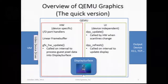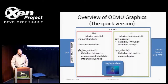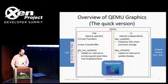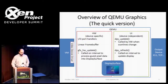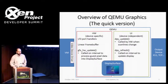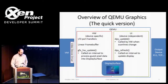This is a quick version of how graphics works in QEMU. There are two sides to the graphics stack: the hardware and the UI. The hardware is device-specific emulation — your Cirrus VGA or what have you. The UI is device-independent, so you can have SDL rendering code or VNC, and it allows you to mix and match. They're pretty well separated from each other.